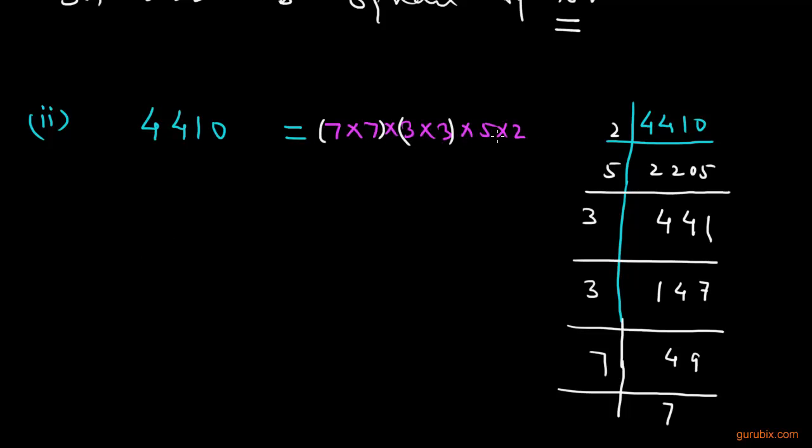And we cannot make pairs of 5 because here is a single factor 5 and 2 also. And we can say clearly on grouping into pairs of equal factors,